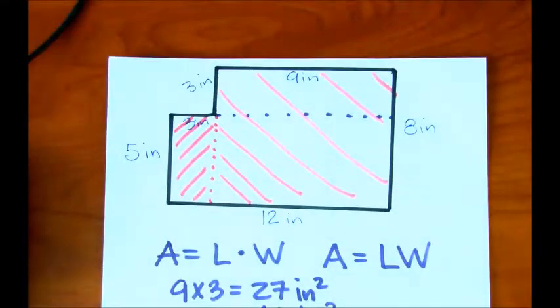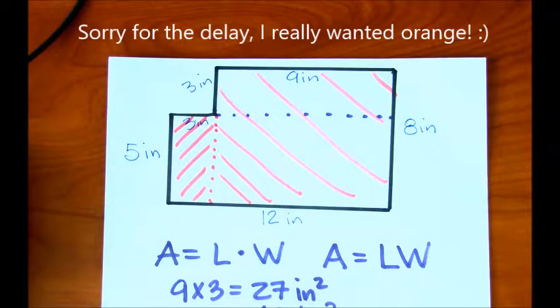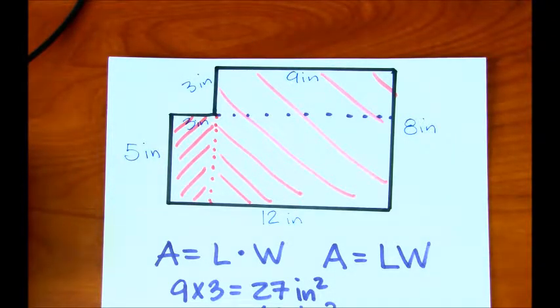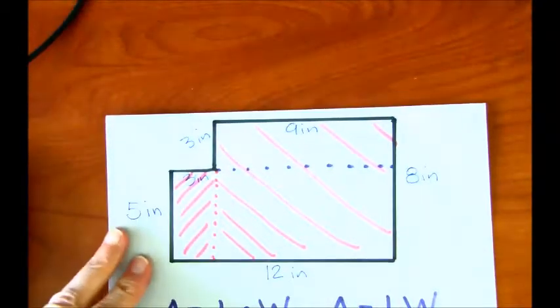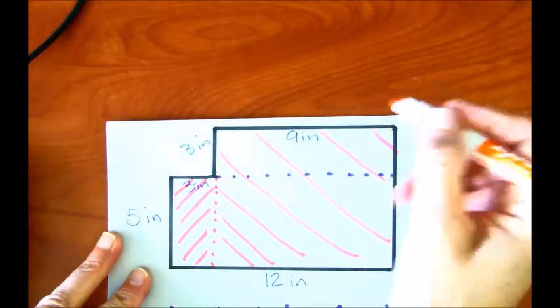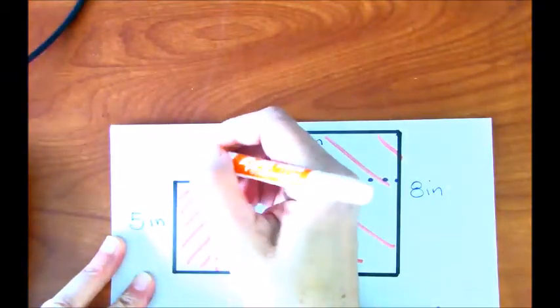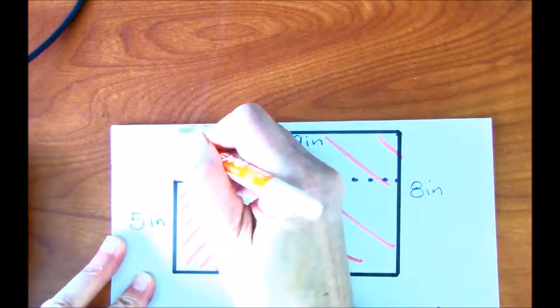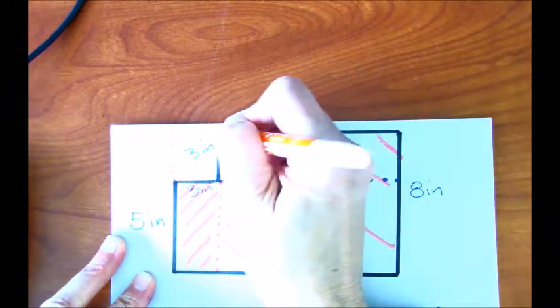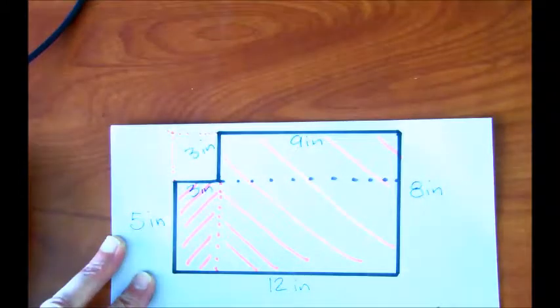We're going to look back at the picture. And a different color. Let's use orange. Here we go. Orange. What would happen if we were to extend this line up? So we're just going to extend it up, and then we're going to extend it over.